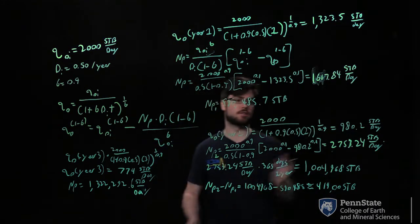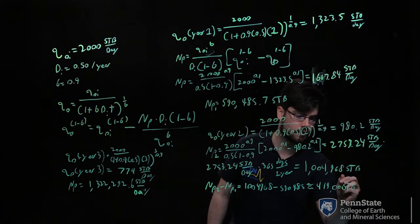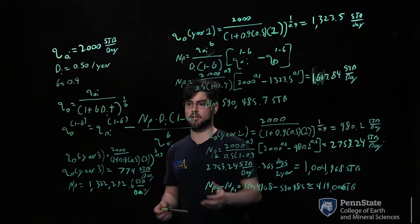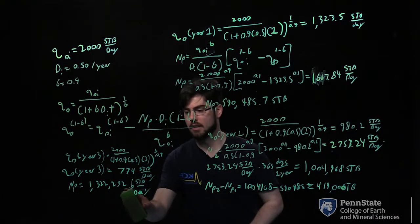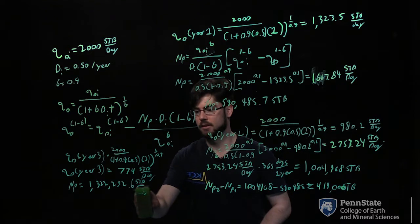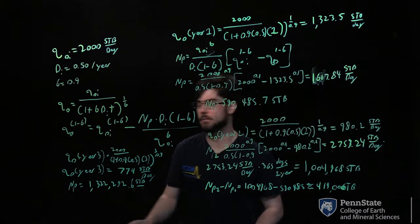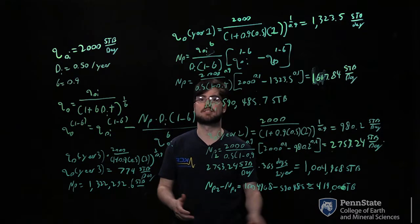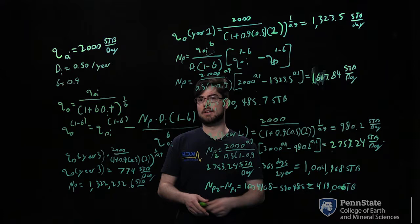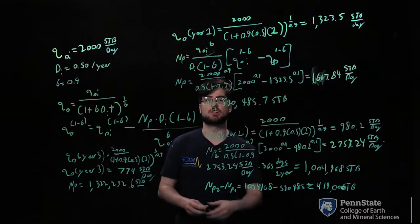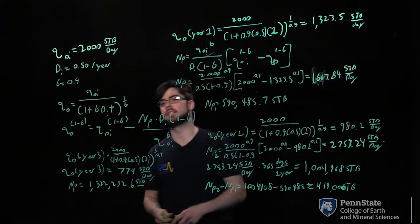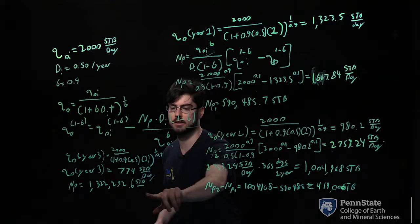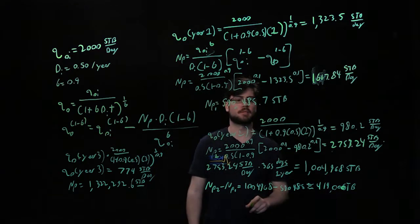Note: the 414,000 figure should have an extra zero. Also, cumulative oil production NP is in terms of STB — it's a volume, not a rate. Flow rate is volume over time (STB per day), whereas NP is just volume (STB). If dealing with gas, you'd use GP in SCF, or water in similar volume units. That's it for this problem.